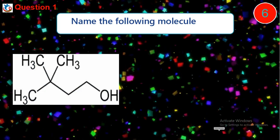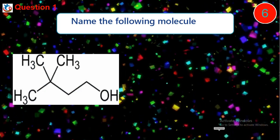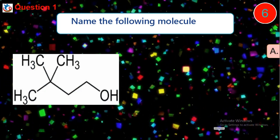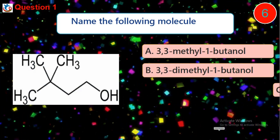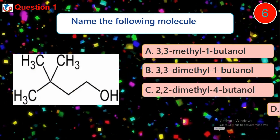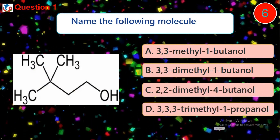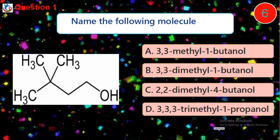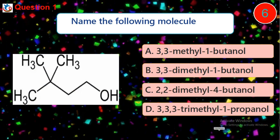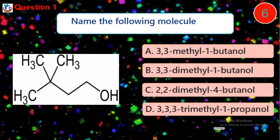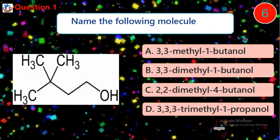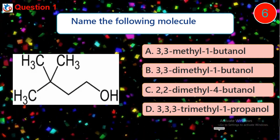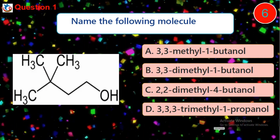Question 1. Name the following molecule. A. 3-methyl-1-butanol. B. 3,3-dimethyl-1-butanol. C. 2,2-dimethyl-4-butanol. D. 3-methyl-1-propanol.